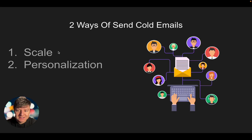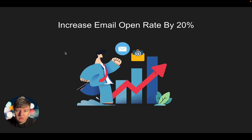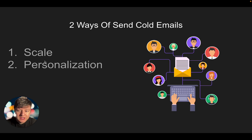A pro for sending emails by scale is that you can send hundreds or even thousands of emails per day. With personalization, you have to send a lot less because it takes a lot of time to personalize each email. We really want to send personalized emails because this will drastically improve your email open rate by a minimum of 20%. But we don't just want to send a couple of emails a day — we want to do both. Later on, I'm going to show you how to use AI to personalize each email while also using scale.